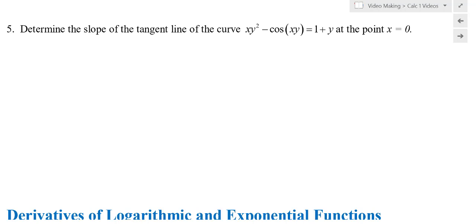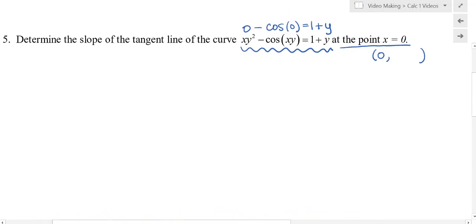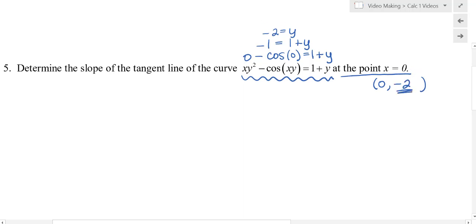The last example: determine the slope of the tangent line to the curve at x equals 0. Since the equation has both x's and y's, I need the full point. Substituting x equals 0 gives 0 minus cosine of 0 equals 1 plus y. Cosine of 0 is 1, so negative 1 equals 1 plus y, which means y equals negative 2. The point is (0, −2).